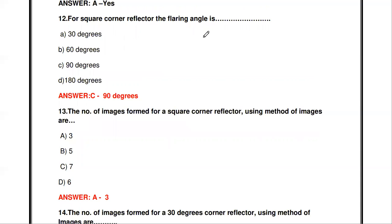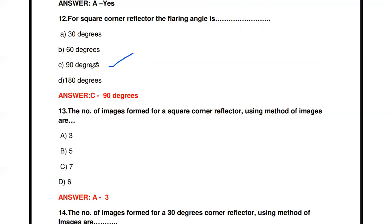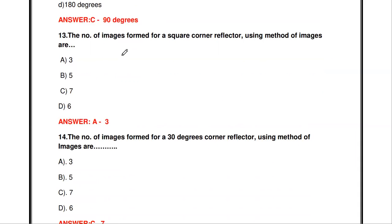The next question: for a square corner reflector, the flaring angle is dash. For a square corner reflector, the flaring angle is 90 degrees. If the angle is 180 degrees, it is a flat sheet reflector. For a square corner reflector, the flaring angle is 90 degrees.